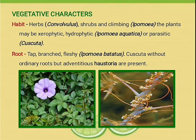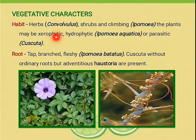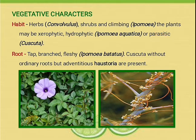Vegetative characters of Convolvulaceae. Habit: herb, e.g. Convolvulus; shrub and climbing in Ipomoea. The plants may be xerophyte — xerophyte plants grow under dry conditions. Hydrophytic, e.g. Ipomoea aquatica — hydrophytic plants grow under water or very wet places. Parasite in Cuscuta reflexa. Parasites obtain their nutrients from the host. This parasitic plant maintains physical contact with the host plant through the haustoria. Haustoria are parasitic roots.